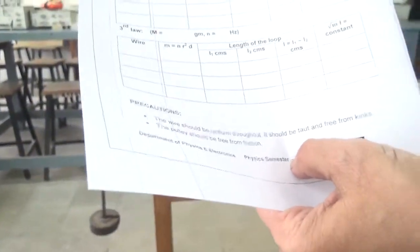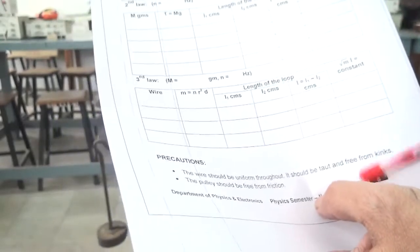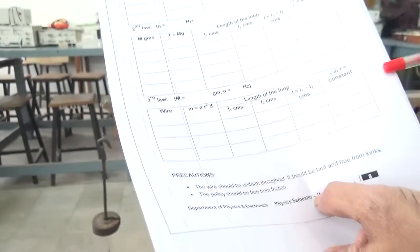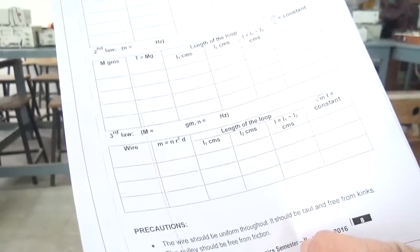Here, μ refers to the linear density - that is, the mass per unit length of the wires. You can take that from the tables for steel, brass, and copper separately and show that this is constant.